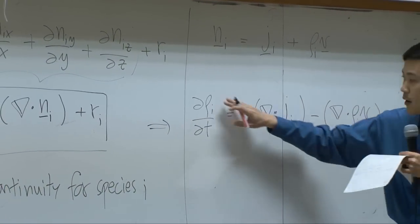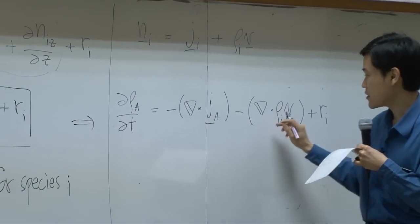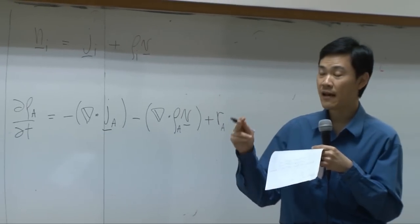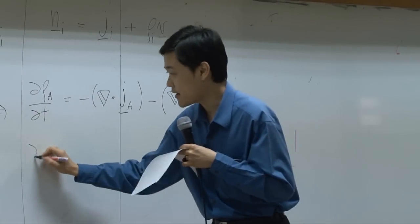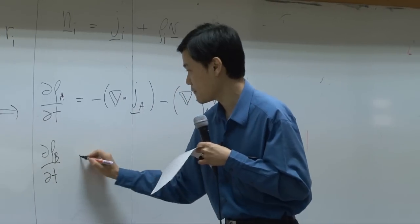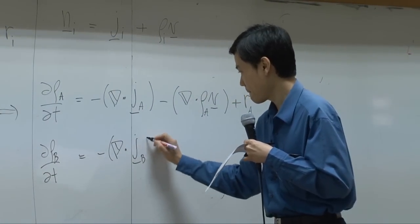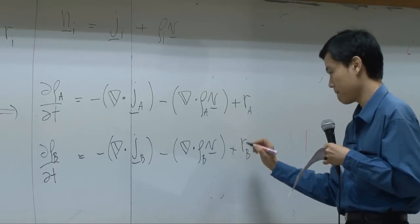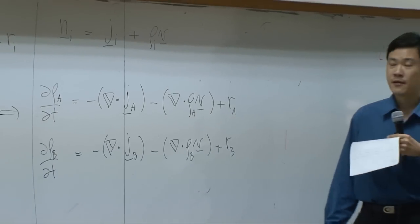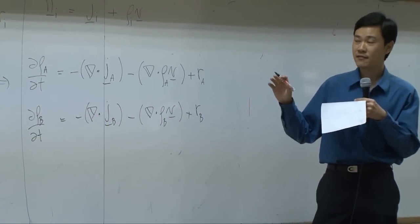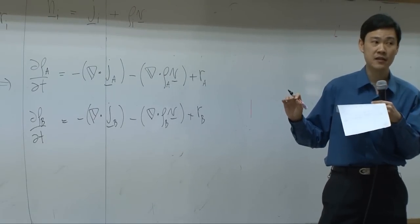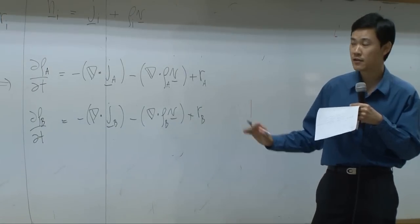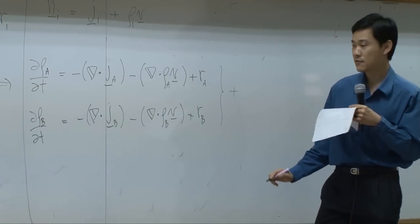So if I write down an equation for species A, for example, the subscript will be replaced by A. Again, if I have two species in our system, A and B, I can write down equation for species B as well. And as long as you have species, you can write down equation like this for any species in your system. So suppose I have only two species. If my system is binary, if I combine these two equations together, what will I get?